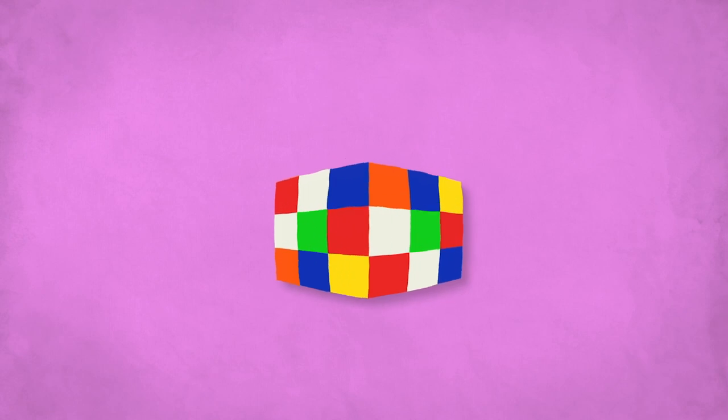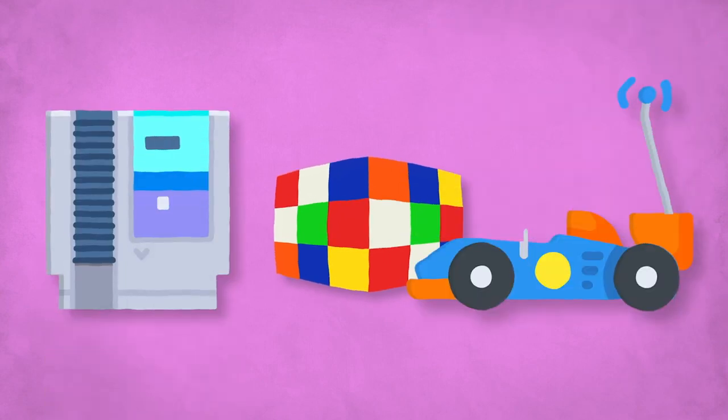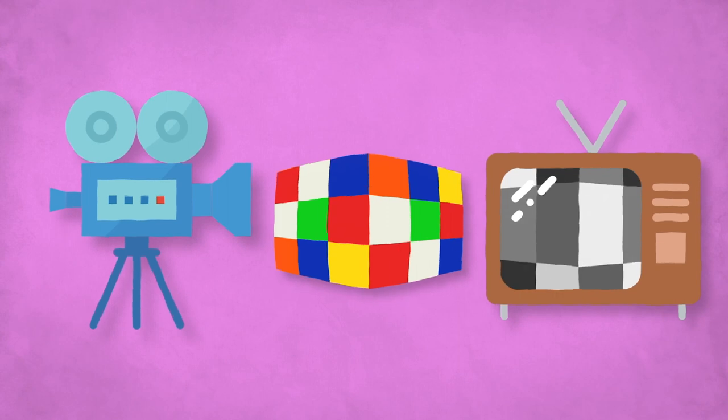But why? After all, it's just a cube, with each side made up of nine smaller cubes. Unlike some other popular toys that came before it, it wasn't electronic, nor was it remote-controlled. It wasn't from a movie or a TV show. Not yet, anyway.